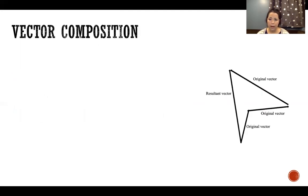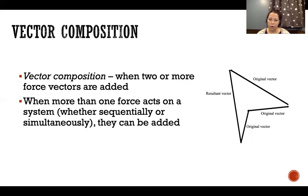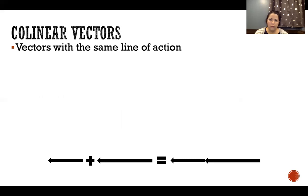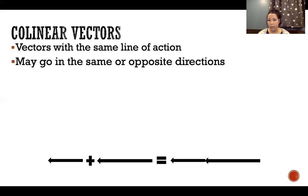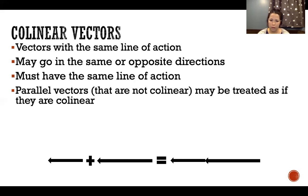Vector composition is when two or more force vectors are added together. When we have more than one force acting on a system, we can add them together to find the resultant vector — the total amount of force and direction being applied to that system. For collinear vectors — those that have the same line of action — it's very easy to add them together. They may go in the same or opposite directions but have the same line of action, meaning they're parallel to each other.